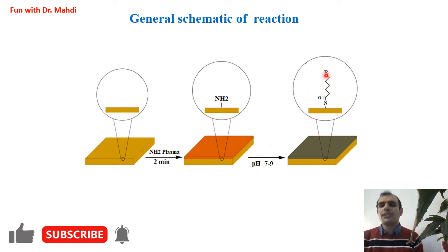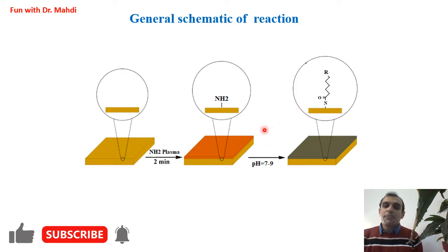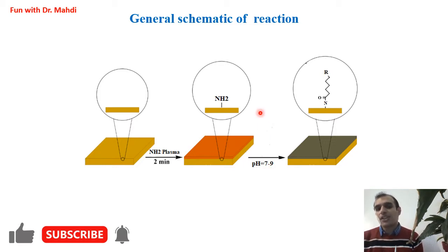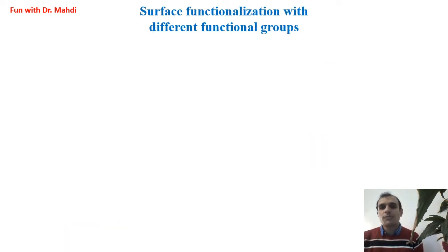After that, we need to dissolve our compound in the solvent and immerse the substrate in this solution for half an hour, maximum one hour. pH is very, very important. Please note, pH should be between 7 to 9. After half an hour or one hour, we can wash the substrate. Now we have our compound on the surface. Here you can see that R can be different — we can change the R; it can be different functional groups.